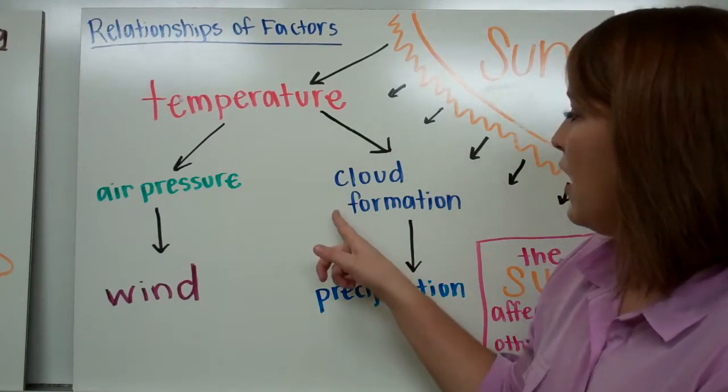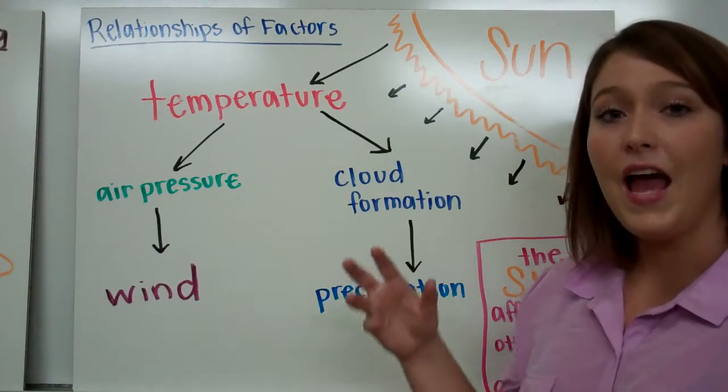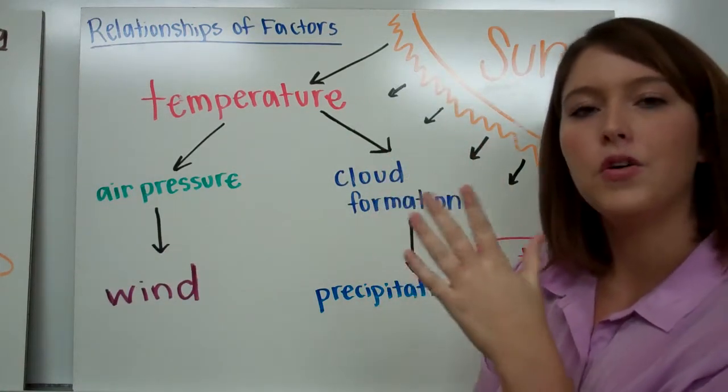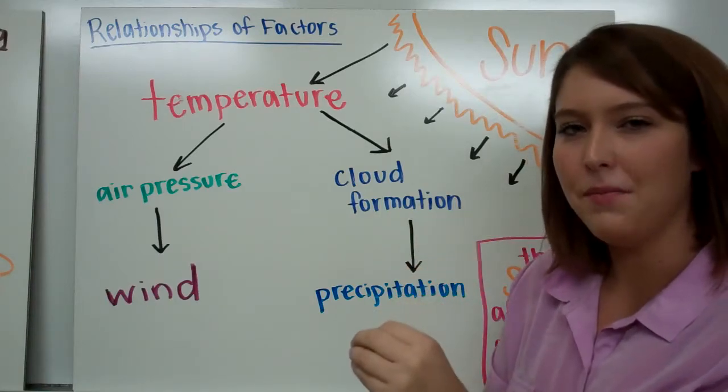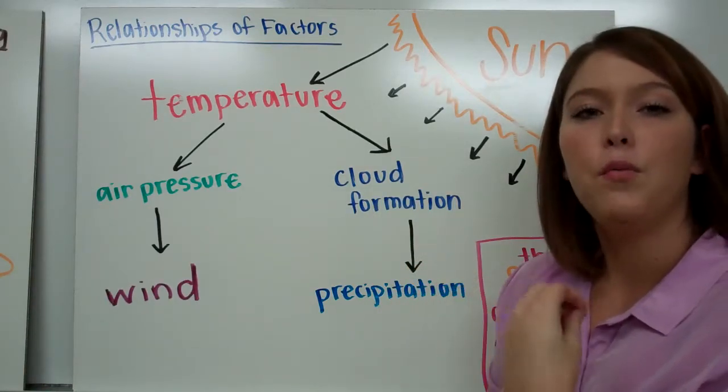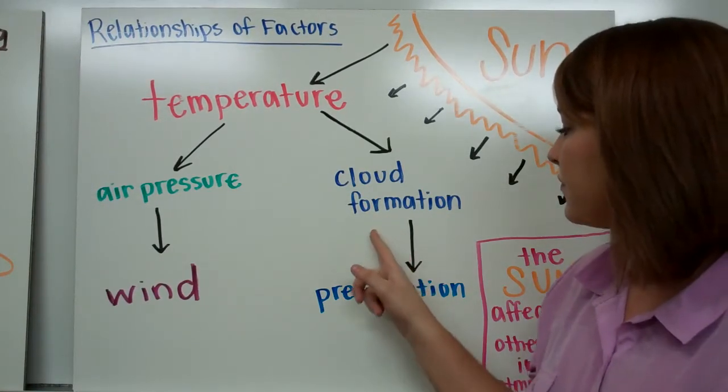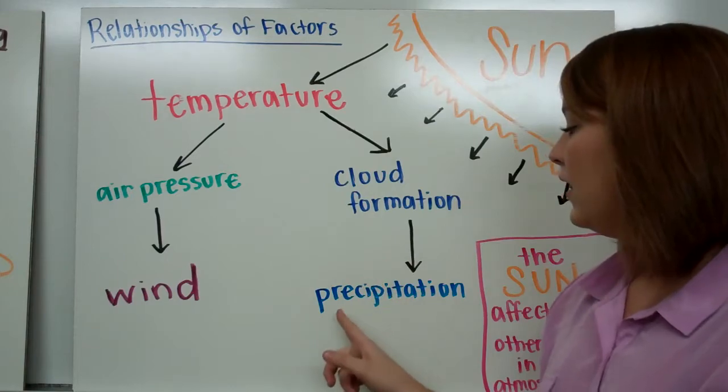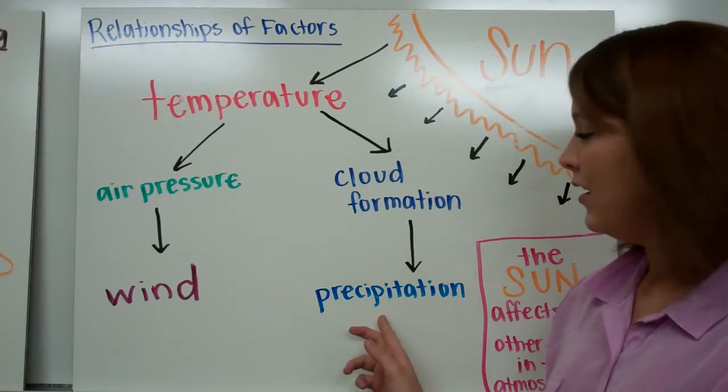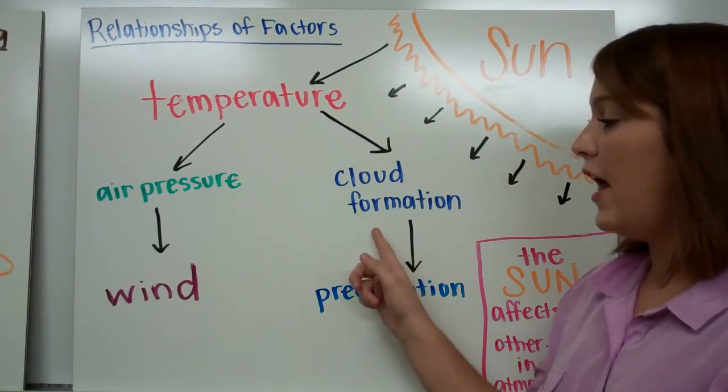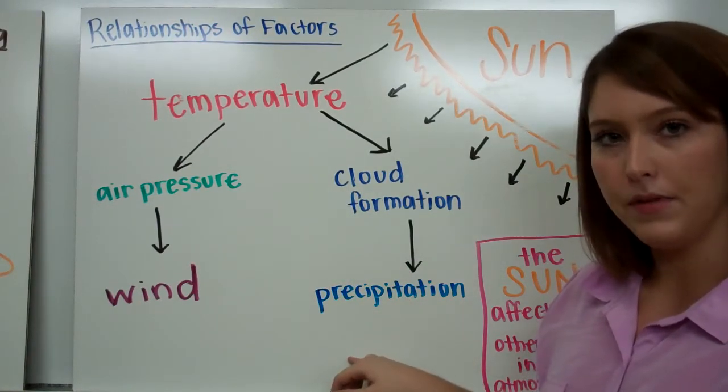Temperature is related to cloud formation because as heat is added to the air, it rises and it cools. Once it cools to a specific point called the dew point temperature, the air cannot hold any more water vapor, and so the water vapor in the air condenses to form a cloud. Cloud formation then leads to precipitation sometimes. To have precipitation you definitely need a cloud, but not all clouds will produce precipitation.